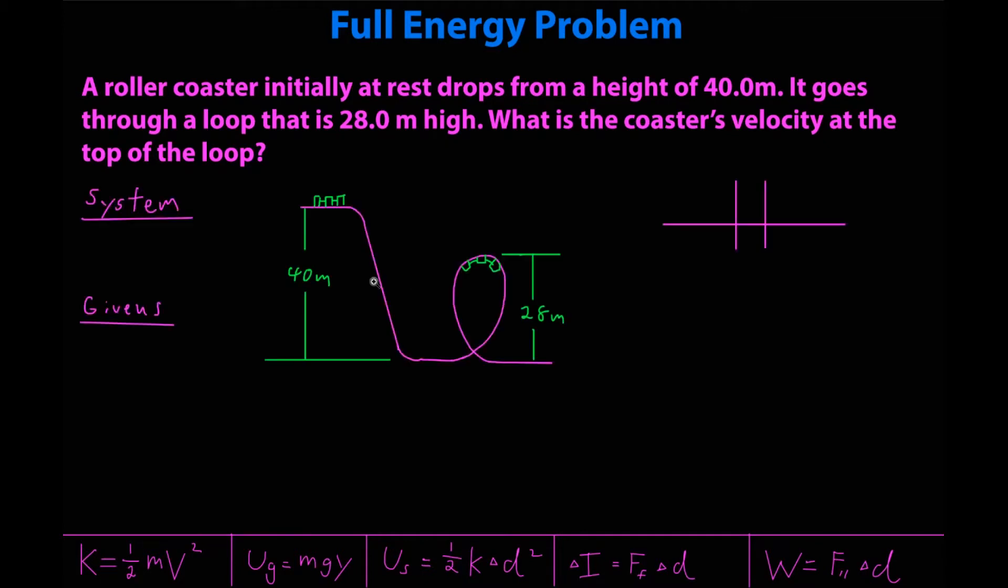So I pre-did a setup for us. I have a section for our system, our givens, very important a drawing of the situation. I have my coaster up here. It is initially at 40 meters high, drops down here, goes through the loop. At the top of the loop it is 28 meters in the air, then finishes going through the loop. There is an assumption here that this coaster is frictionless which is pretty common unless friction is specifically mentioned. I also have this set up for my bar graph over here which I'll get to in a moment. I'm going to start with my givens. So initial velocity is zero. Final velocity is what we're looking for. Height initial is 40 meters because the initial point is here. The final point is at the top of the loop which means height final is 28 meters.